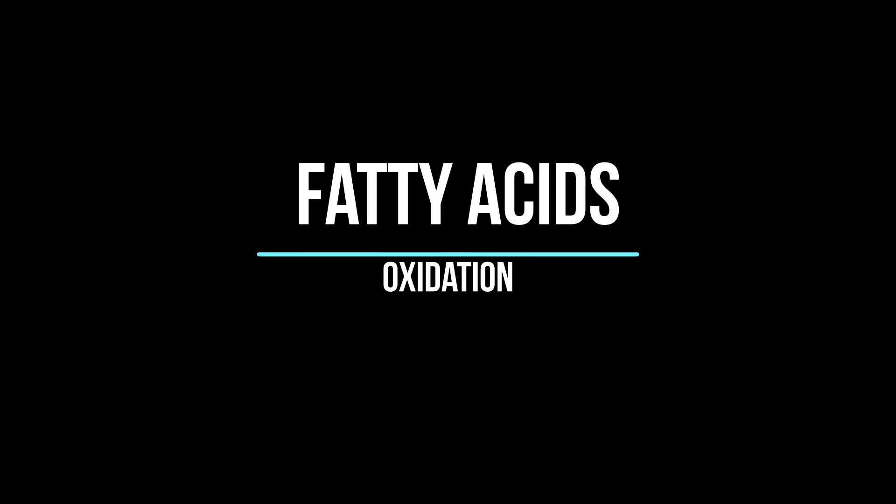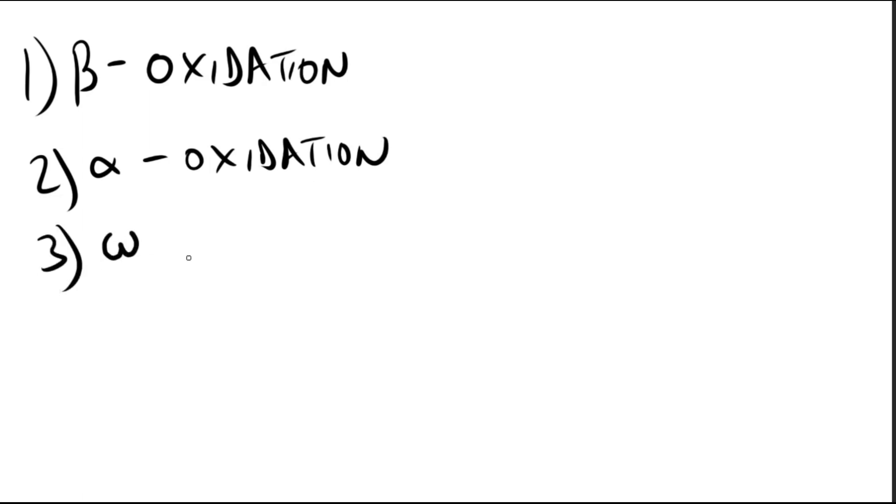Hey guys, it's Layla. Today we'll speak about fatty acids and oxidation. There are three types of oxidations. The major pathway for catabolism of fatty acids is called beta oxidation, and it involves two carbon fragments being removed from the carboxyl end of the fatty acyl coenzyme A, producing acetyl coenzyme A, NADH, and FADH2.